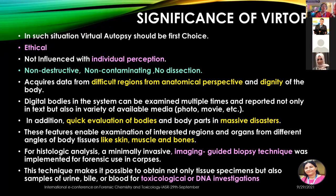The significance of virtual autopsies is that they are ethical, not influenced by individual perceptions, non-destructive, non-contaminating, and require no dissection. They acquire data from difficult anatomical regions and maintain the dignity of the body. They can even provide comfort to the patient's relatives. Digital bodies in the system can be examined multiple times and reported in the form of text, photos, and media. Additionally, evaluations of bodies and body parts can be done in massive disaster cases. These features enable examination of regions and organs from different angles, including skin, muscles, and bone tissues.